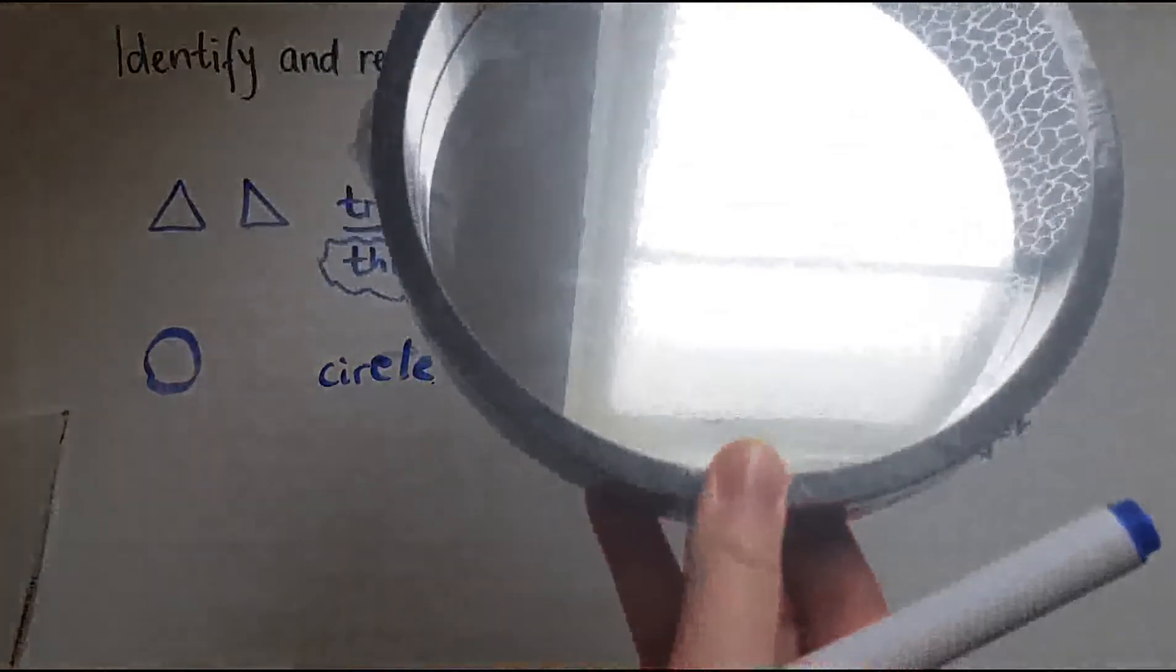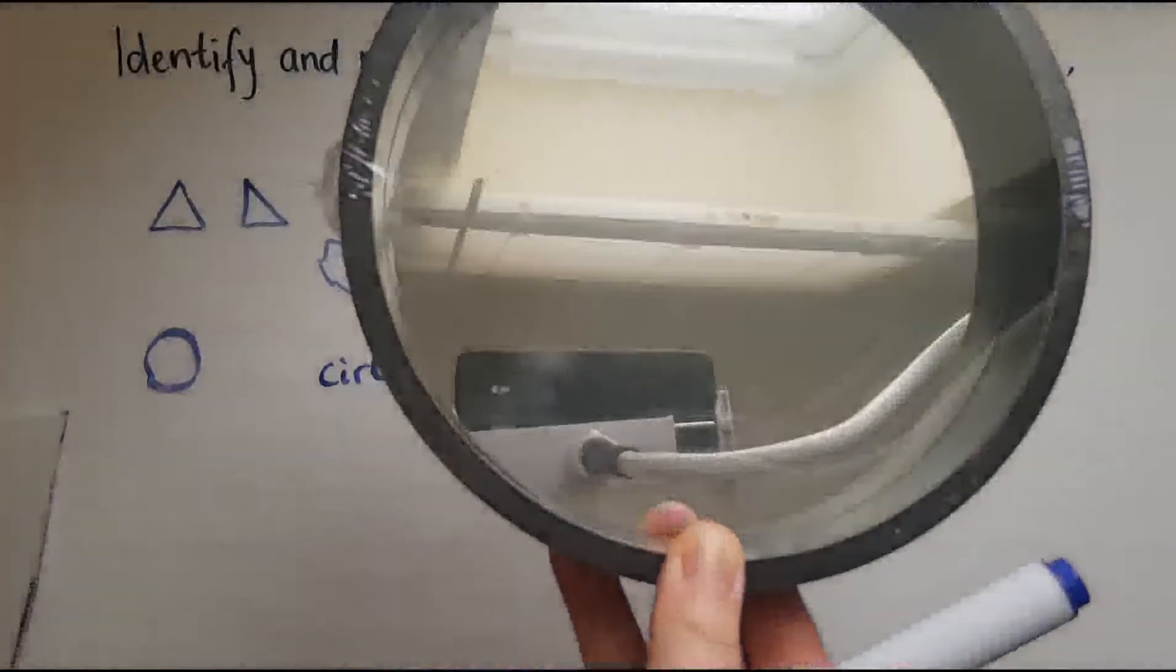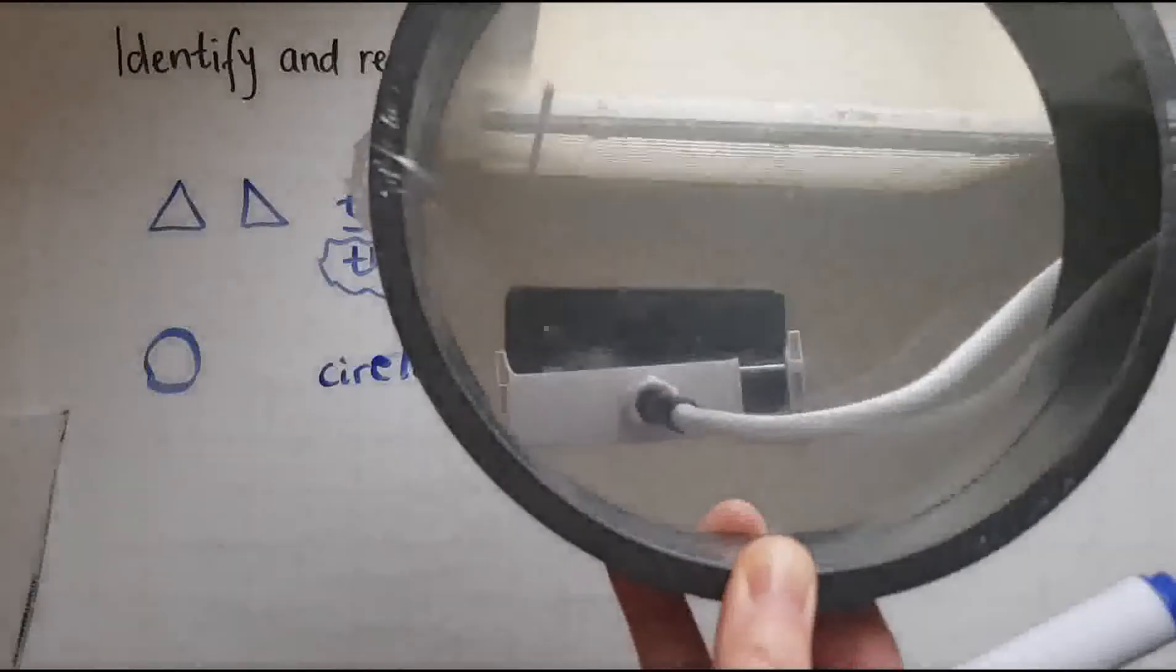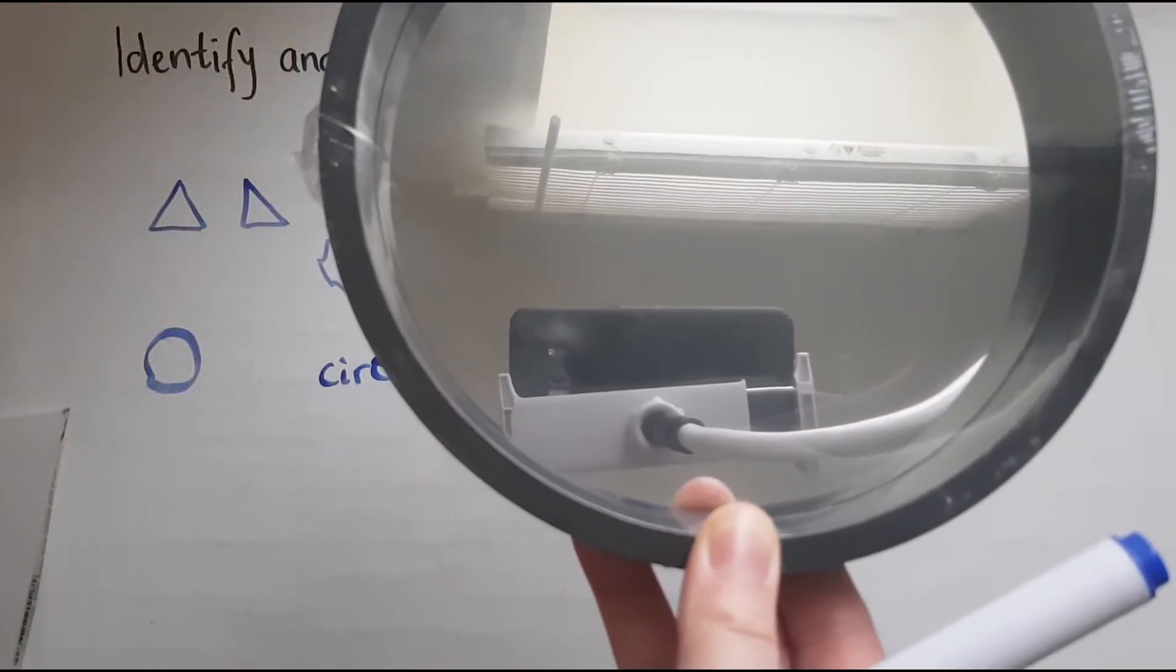An example is a mirror, for instance. So this mirror is round, and it's in a circle shape.